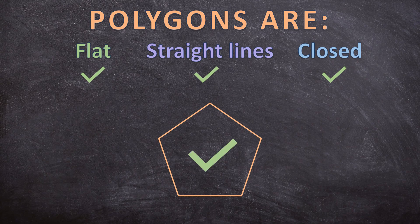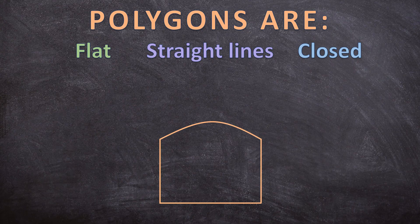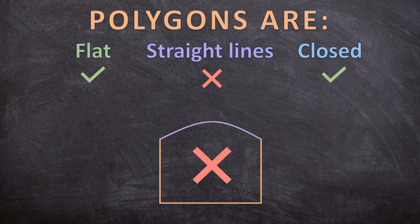How about this next shape? Is this shape flat? Yes. Is it a closed shape? Yes, it is a closed shape. But does it only consist out of straight lines? No — there's a curved line. So this is not a polygon.